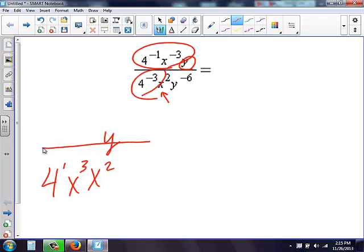These bottom, 4 to the negative 3, and y to the negative 6, I need to move it to the top to make them become positive. So I move the 4 to the third to the top, and then I have y to the sixth on top.